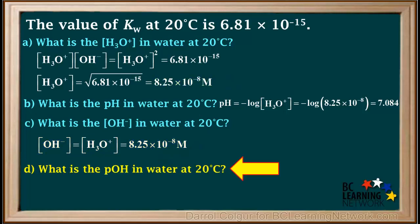Question D asks us to find the pOH in water at 20 degrees. Remember, we cannot use 14 minus pH to find the pOH because we're not at 25 degrees.